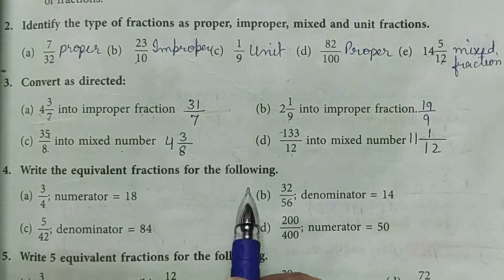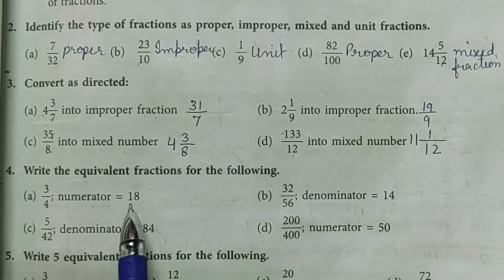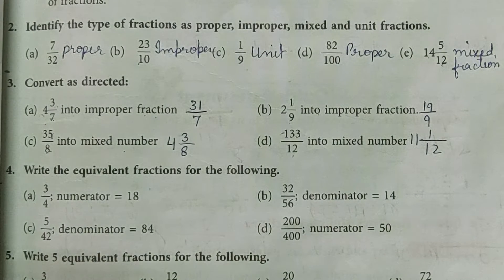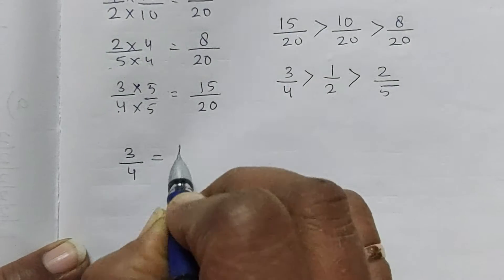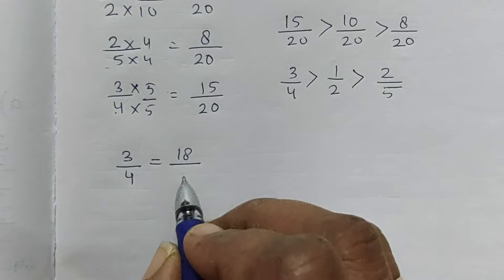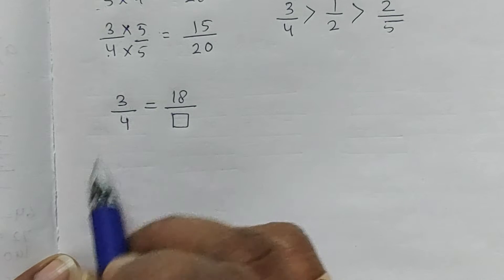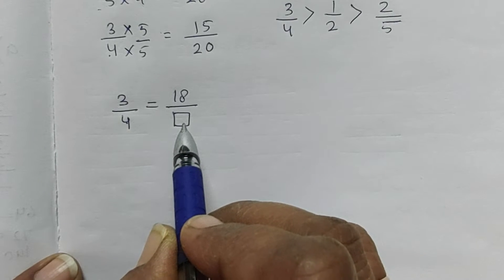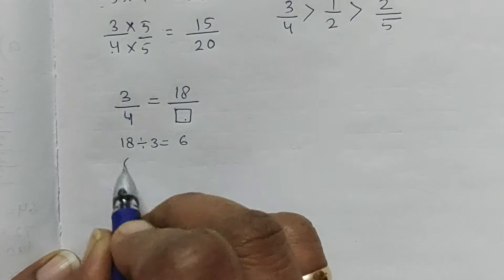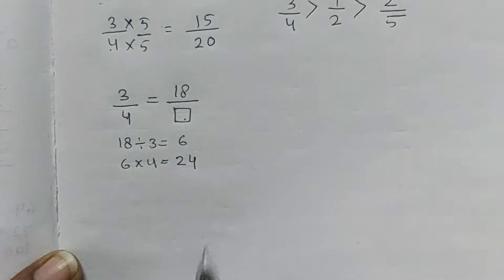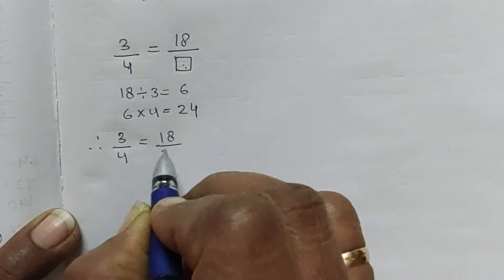Question number 4: write the equivalent fractions for the following. Part A — find the equivalent fraction of 3 by 4 where the numerator is 18. We divide 18 by 3, which equals 6, then multiply 4 by 6 to get 24. So 3 by 4 is equal to 18 by 24.